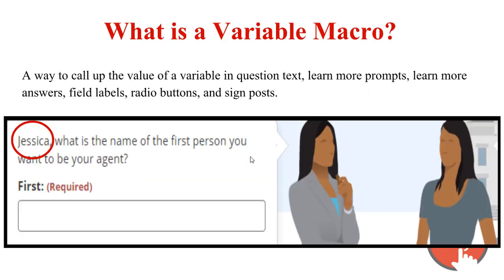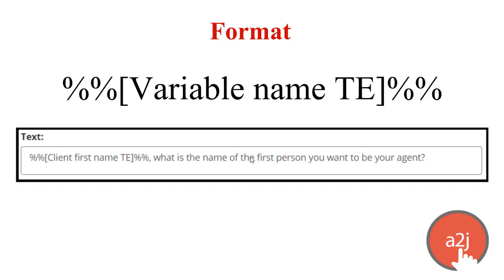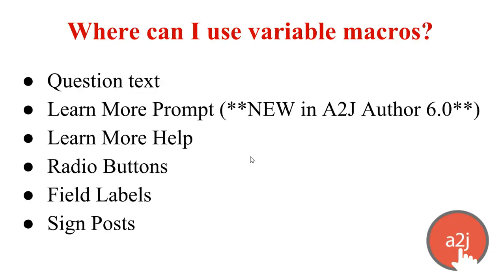Looking back at this screenshot, this is what it would look like to the end user. You can use variable macros in several places within your guided interview: in the question text, in a learn more prompt (which is new in A2J Author 6), and in the learn more help. The prompt is what the end user avatar thinks; the help is the answer the guide avatar gives if the end user clicks the learn more button. You can also use it in radio buttons, field labels, and signposts.